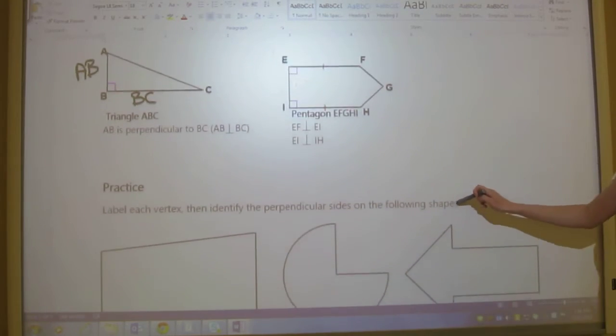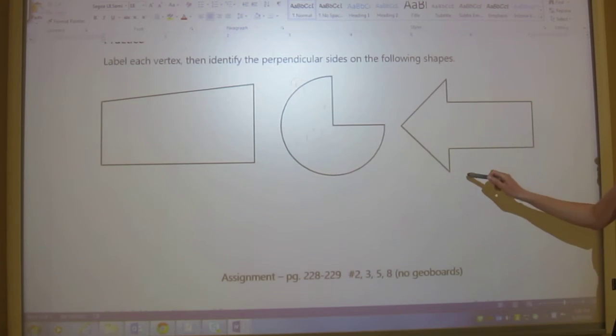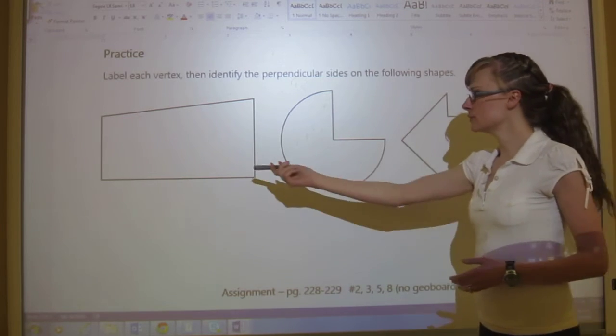Okay, so let's do the practice now. It says to label each vertex, then identify the perpendicular sides on the following shapes. So we'll do this one together.